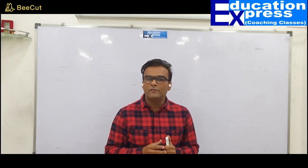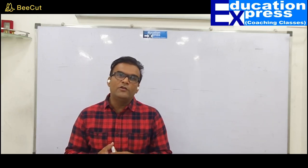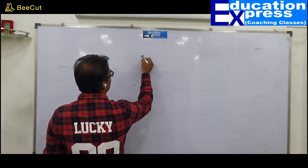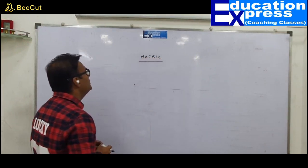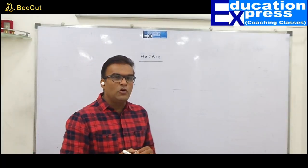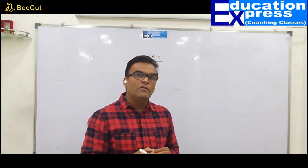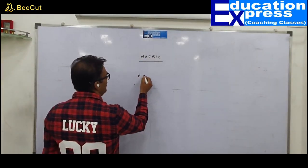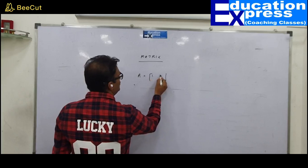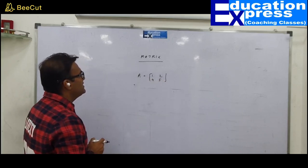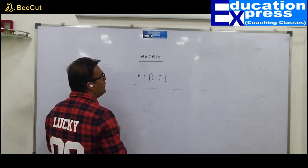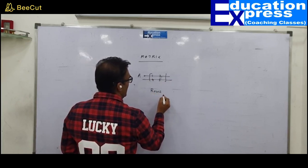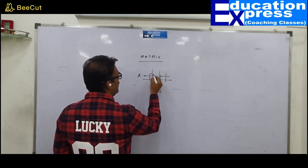So what exactly do you mean by the term Matrices? First of all, Matrices is a plural word — the singular word is MATRIX. A matrix is merely an arrangement of numbers in a rectangular form — a rectangular order in the form of rows and columns. So a matrix looks like this: matrix A with elements 1, 2, 4, 5 — arrangement in a rectangular form.